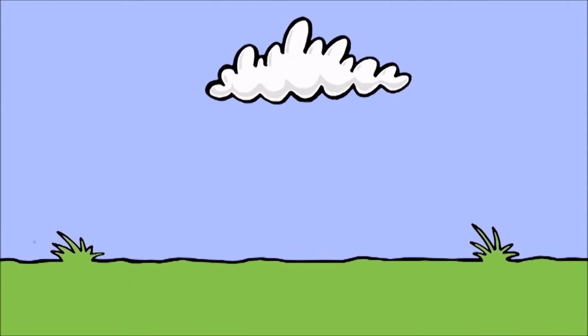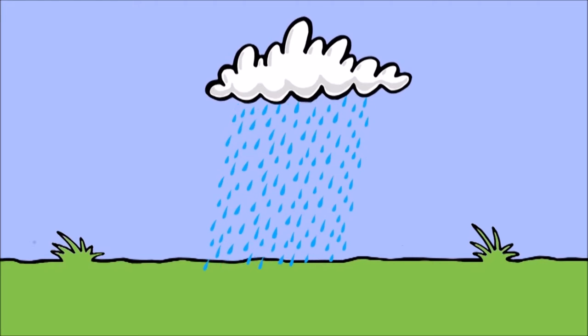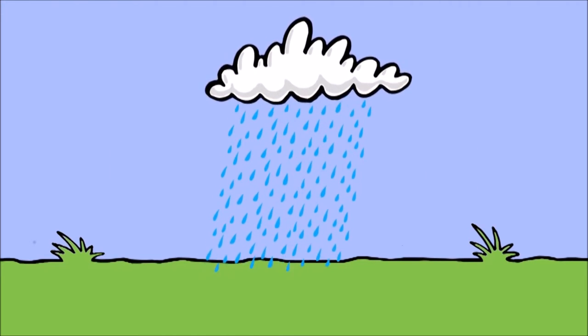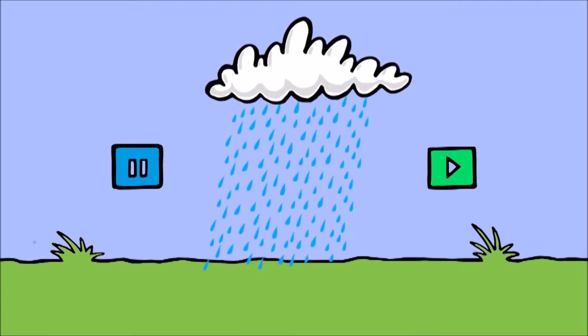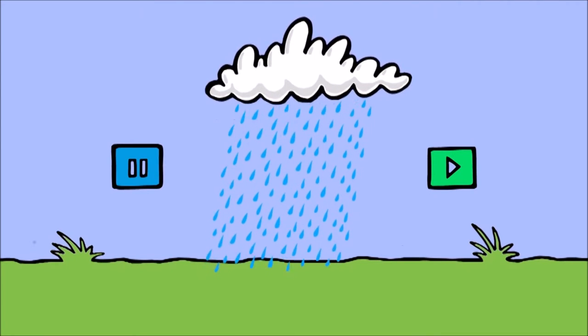Once all of the water is collected in the cloud, you know what happens next. It falls back down. The fancy word for this is precipitation, and it can take many forms. Can you name a few? Pause the video and continue when you can name at least four forms of precipitation.